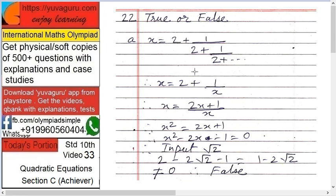Now x equals 2 plus, see, this whole term can be written as x again. So x equals 2 plus 1 upon x. Solving this: 2x plus 1 upon x, then x² equals 2x plus 1. Therefore x² minus 2x minus 1 equals 0.